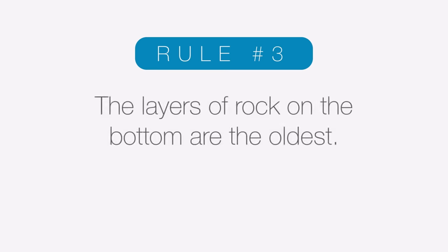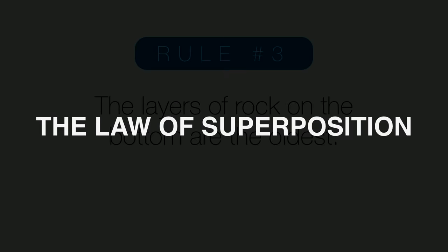Rule number three is pretty logical. When we look at layers of rock, we can assume that the layers towards the bottom of the sequence are going to be the oldest, and as you get closer to the top, they get younger and younger. This is called the law of superposition, and it's true in almost all cases. The exception would be if the layers have been so severely deformed and folded that they've been flipped upside down — called overturning. For the sequences we'll start with, we can assume the layers have not been overturned and that the law of superposition applies.